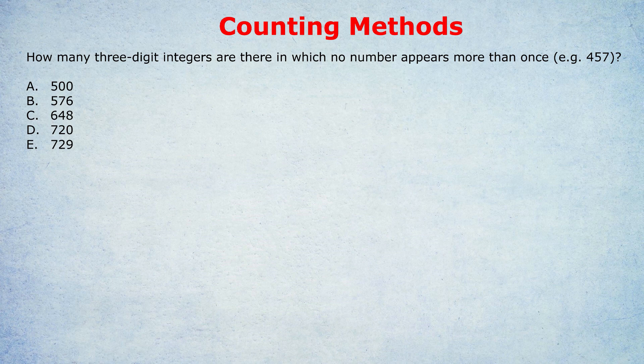Let's look at the first of the three examples I have on this type of question. How many three-digit integers are there in which no number appears more than once, e.g. 457? Now, the wrong and long way of doing this would be to just think to yourself, oh, how many numbers would that be? Let's try and write down all the examples. That could be 128 or 129. Oh, there's so many. Oh, maybe I need to count up all the different examples between 100 and 200 and then multiply that by 9 or something.